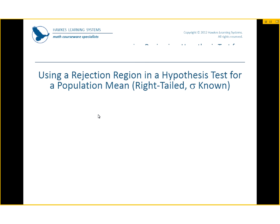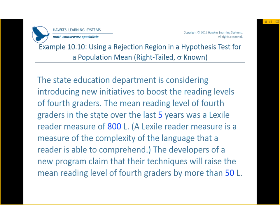Let's do a problem. The state education department is considering introducing new incentives to boost the reading levels of fourth graders. The mean reading level of fourth graders in the state over the last five years was a lexile reading measure of 800L. A lexile reading measure is a measure of complexity of the language that a reader is able to comprehend. The developers of the new program claim that their techniques will raise the mean reading level for fourth graders by more than 50L.